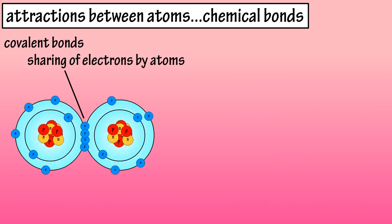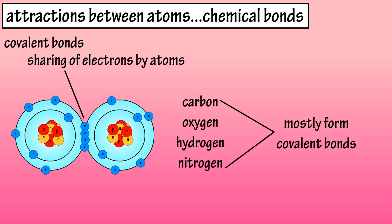Now for covalent bonds. Covalent bonds are chemical bonds that are formed by the sharing of one or more pairs of electrons by the outer energy levels or shells of two atoms. The four major elements of the body, carbon, oxygen, hydrogen, and nitrogen, almost always form covalent bonds by sharing electrons.